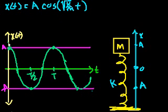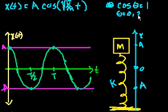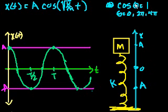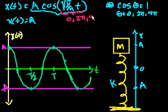If this is a cosine function, what are all the points at which cosine equals 1? Because whenever cosine equals 1, this whole function equals A. Cosine equals 1 when theta equals 0 — cosine of 0 is 1. Cosine of 2π is also 1; we just keep going around the unit circle. It's also true at 4π — really any multiple of 2π. So x(t) equals A whenever the expression inside the cosine equals 0, 2π, 4π, et cetera.